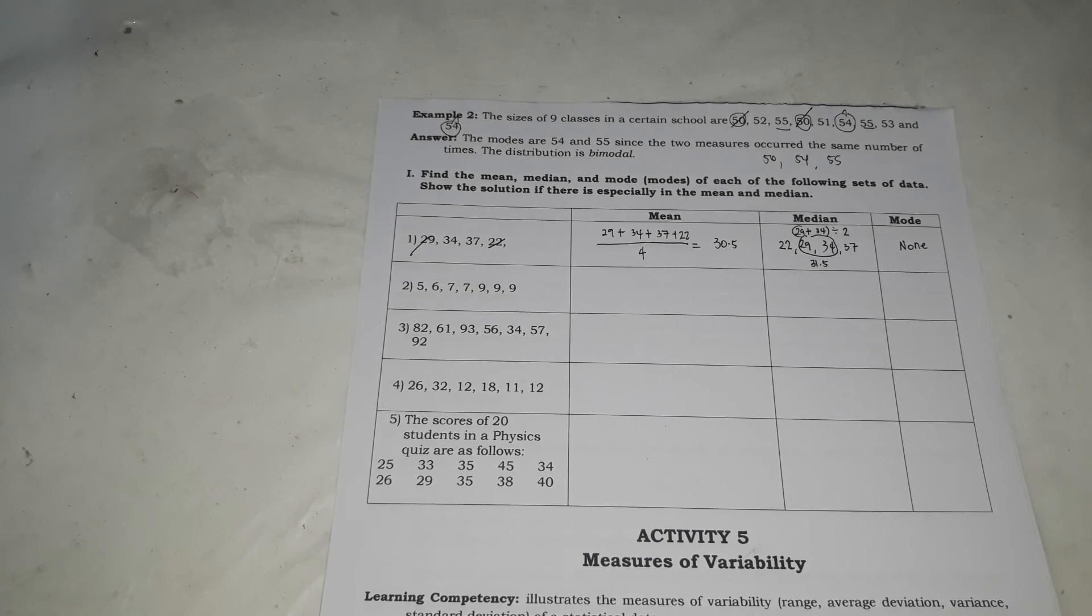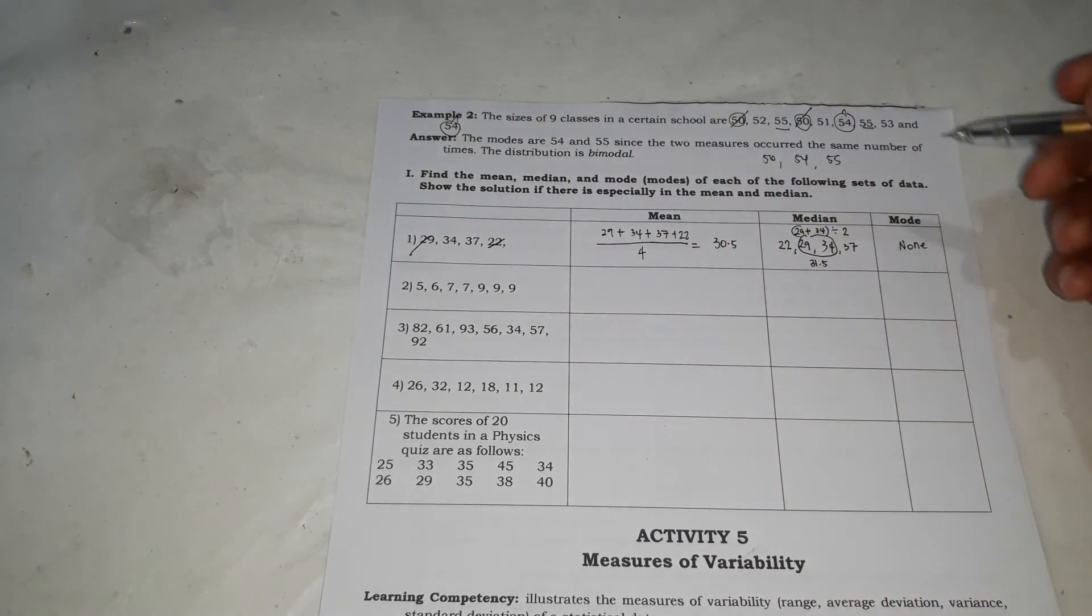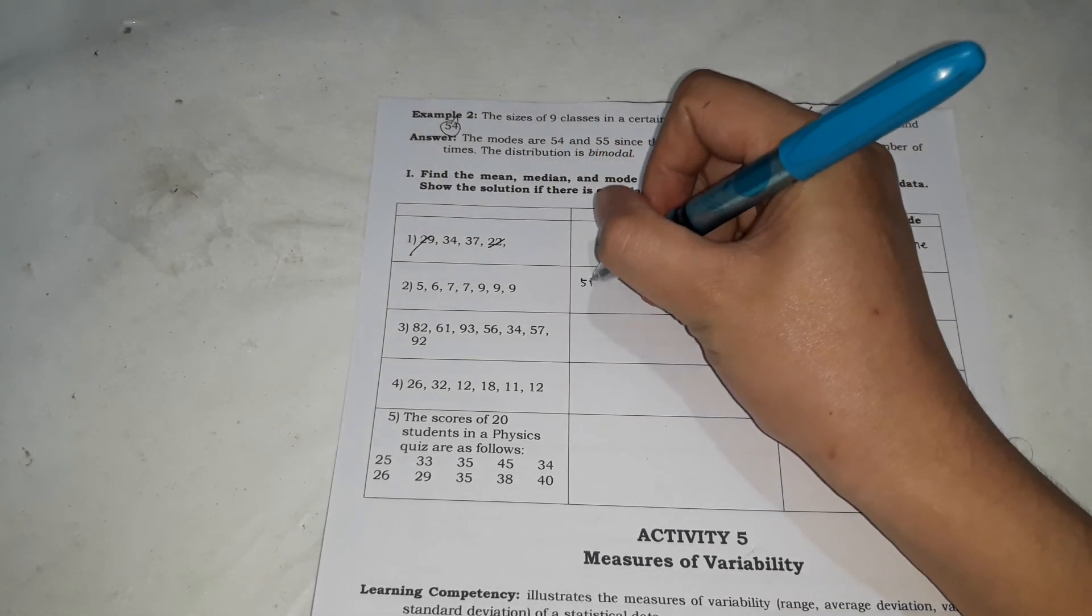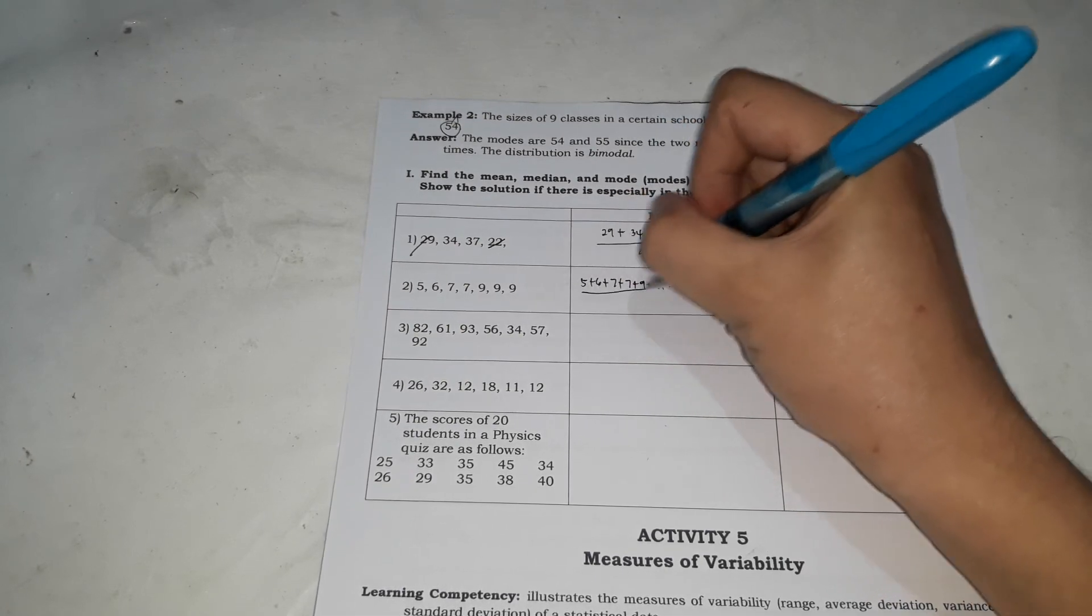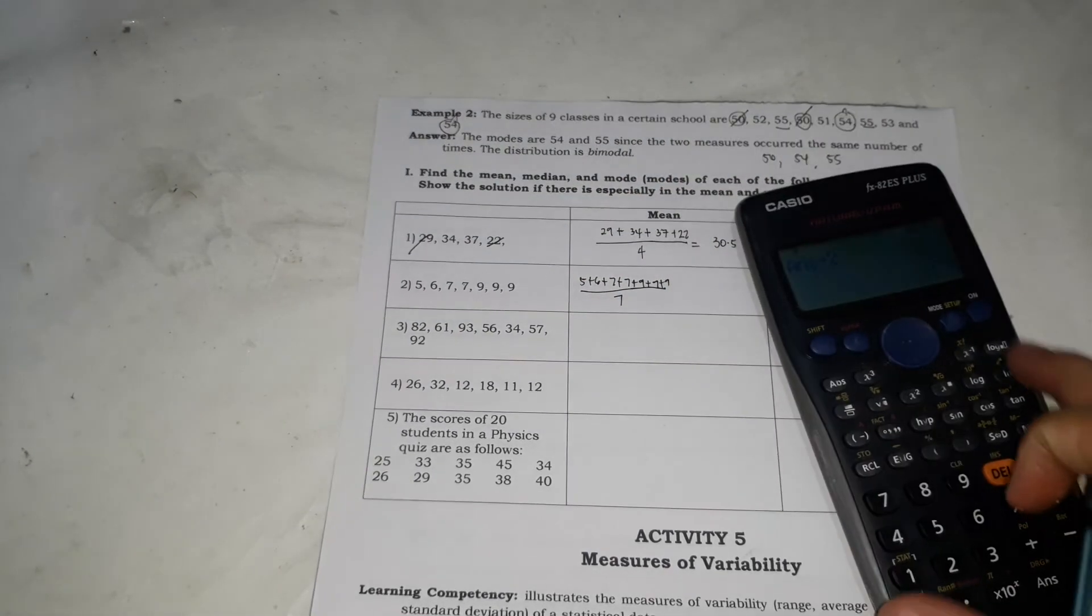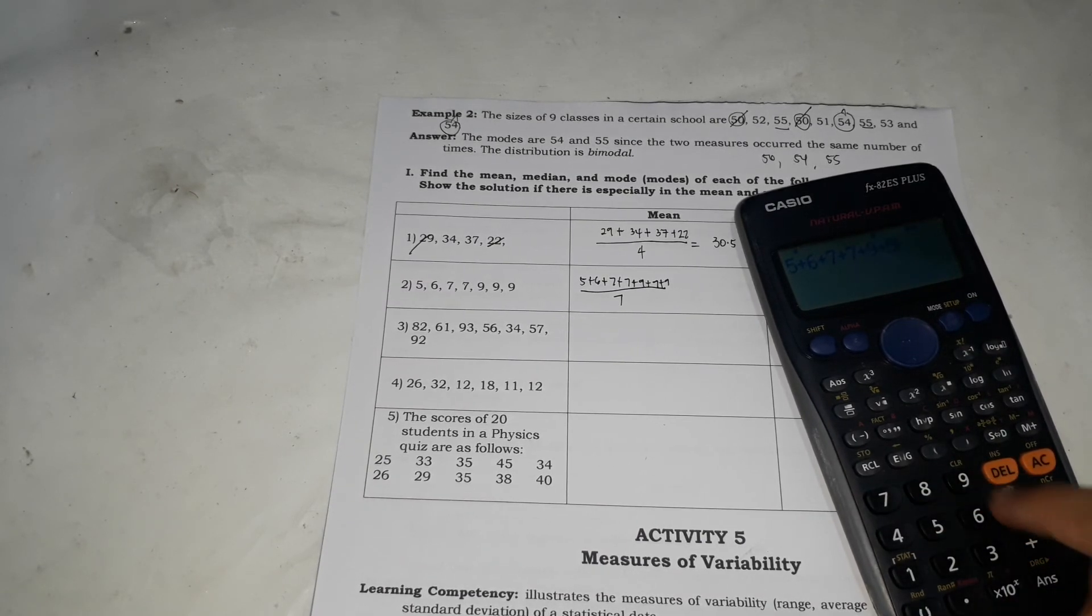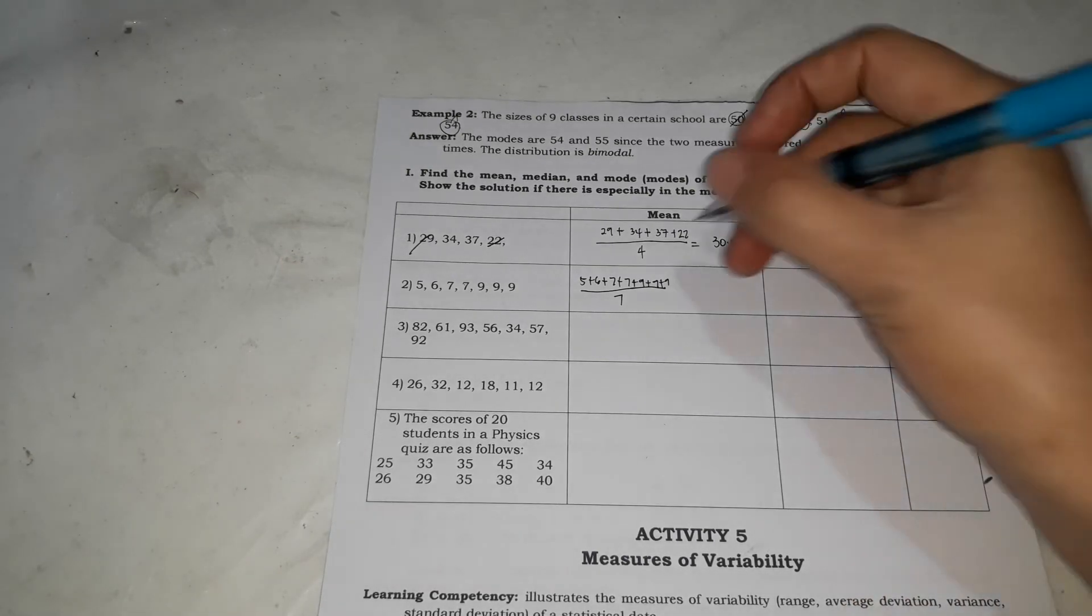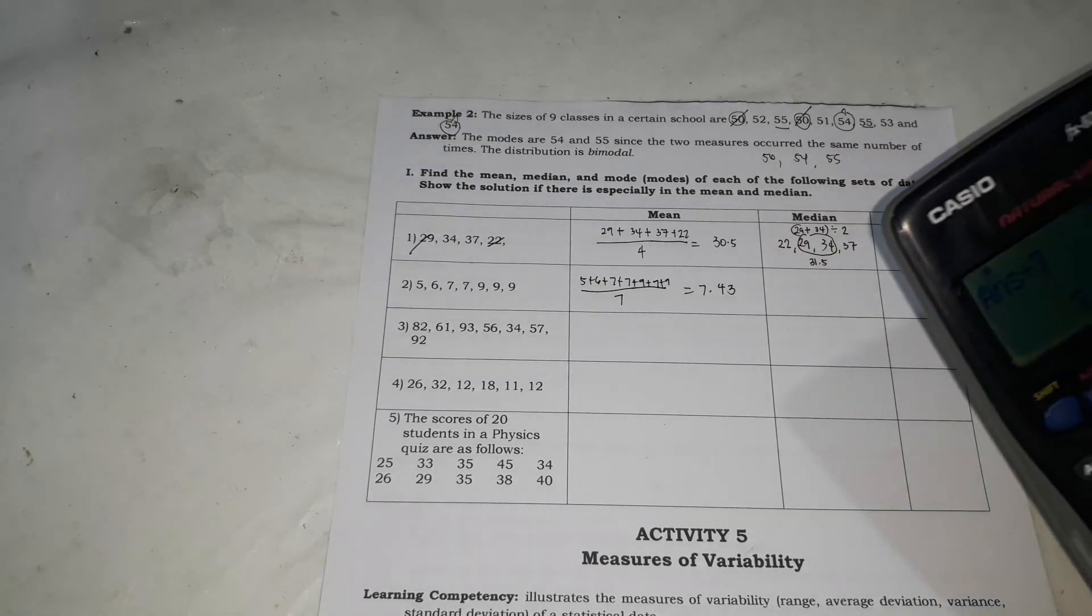So next, for number 2. So 5, 6, 7, 7, 9, 9. So mas madali na siya kasi naka-arrange na siya. So all you have to do is plus 5 plus 6 plus 7 plus 7 plus 9 plus 9 plus 9. Divide mo by kung ilan yan sila. 1, 2, 3, 4, 5, 6, 7. So plus mo sila. 5 plus 6 plus 7 plus 7 plus 9 plus 9, divide mo by 7. So it's 7.43 rounded off. So the mean is 7.43.